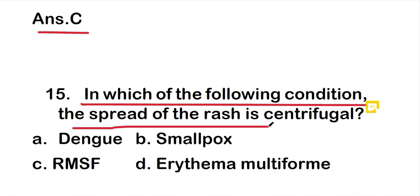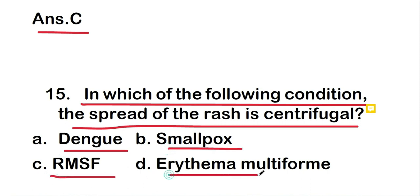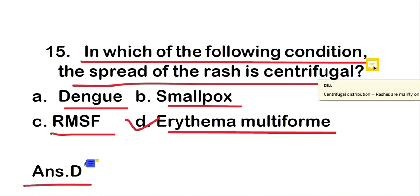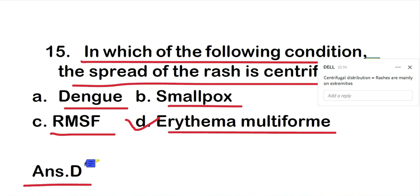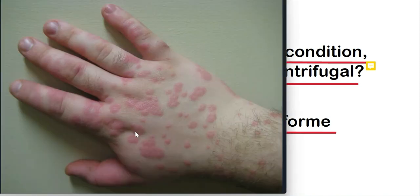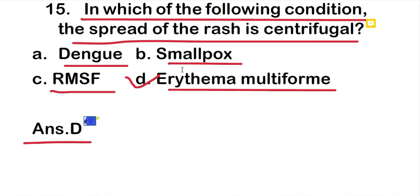Question 15: In which of the following conditions is the spread of the rash centrifugal? The options are Dengue, Smallpox, RMSF, or Erythema multiforme. The right answer is option D: Erythema multiforme. In Erythema multiforme, the rash is centrifugal, meaning rashes are mainly on the extremities, as can be seen in the picture shown.